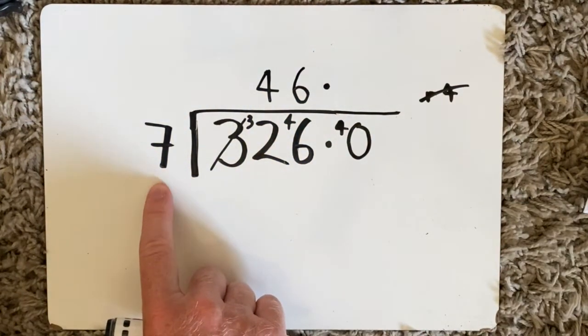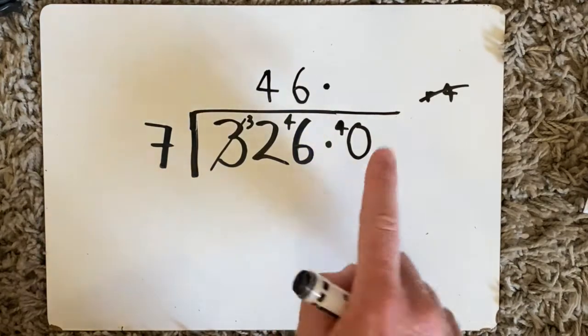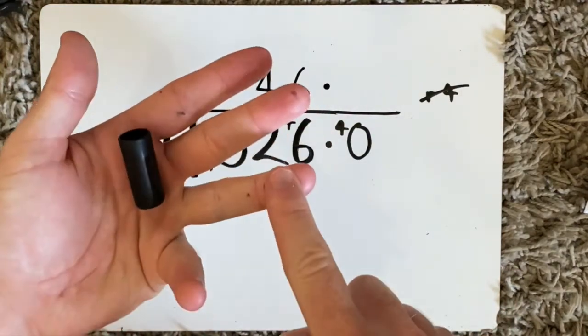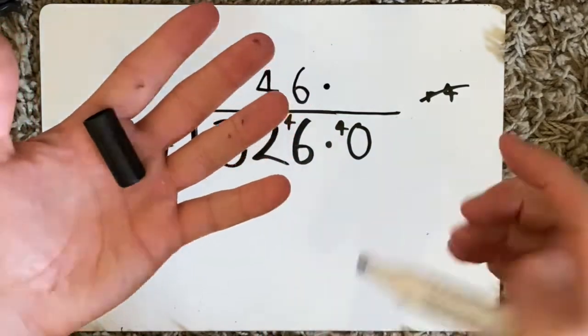Then I say how many sevens in 40? 7, 14, 21, 28, 35. So there's 5.